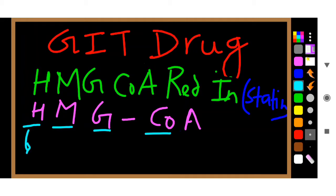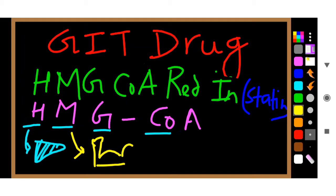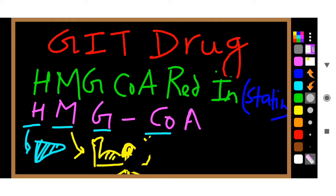H means Hepatotoxicity — I have drawn a small liver for you. M means Myositis, which is inflammation of the muscles. I have drawn a person's arm — one arm is very muscular and another is thin — to represent the muscle. So H is hepatotoxicity and M is myositis.